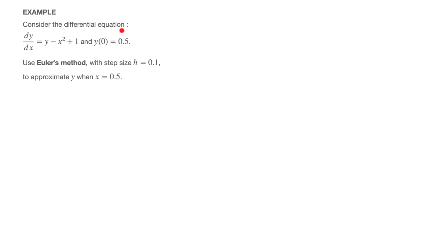We're told: consider the differential equation dy/dx, which equals y minus x squared plus 1, and y(0) equals 0.5. In other words, when x equals 0, y is equal to 0.5. We're then told: use Euler's method with step size h equals 0.1 to approximate y when x equals 0.5.